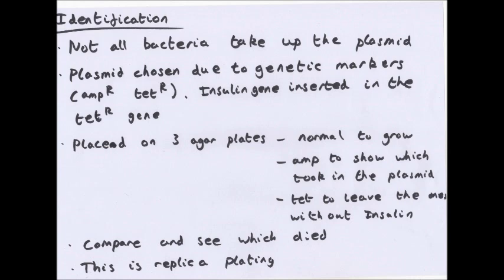I personally think this is really clever how this works. The plasmid chosen for the human insulin gene has genetic markers - two resistances to certain antibiotics: ampicillin and tetracycline, called amp-R and tetra-resistant. The place you cut into the plasmid is right in between the tetra-resistant gene, and you insert the insulin gene there. If you do that, it means instantly the tetra-resistant gene won't work. So we now have a plasmid with a working insulin gene, a working amp-resistant gene, and a non-working tetra-resistant gene because it's split in two.